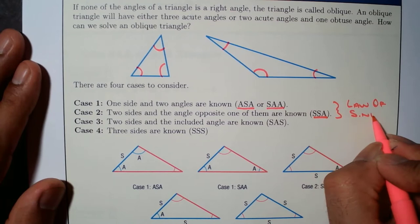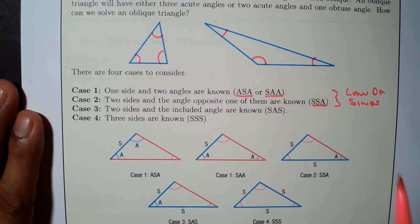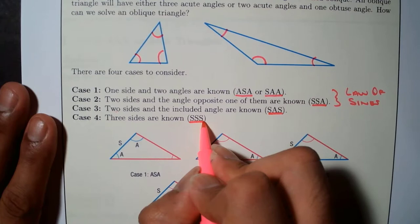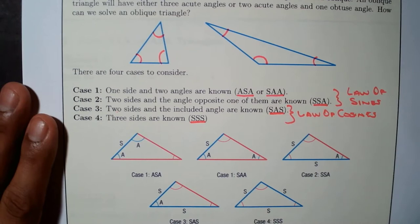And then we have cases three and four. Case three: two sides and the included angle are known — this is known as side-angle-side. And case four: the three sides are known — that's side-side-side. For these two cases, we use the Law of Cosines.